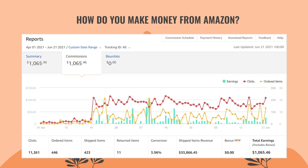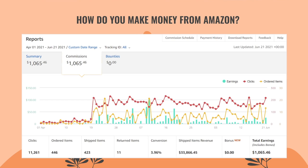So how do you make money from Amazon? Here's one of my Amazon Associates accounts — I sent people to Amazon and got 11,000 clicks. 446 items were ordered, with a conversion rate of 3.96%, meaning about 4 out of every 100 people I send actually convert and buy. I've sold $33,000 worth of Amazon products, and we get a small commission — about 3% depending on the niche. Amazon did cut commission tiers about in half back in 2020, but it's still a good program for beginners. Total earnings shown here: $1,065.